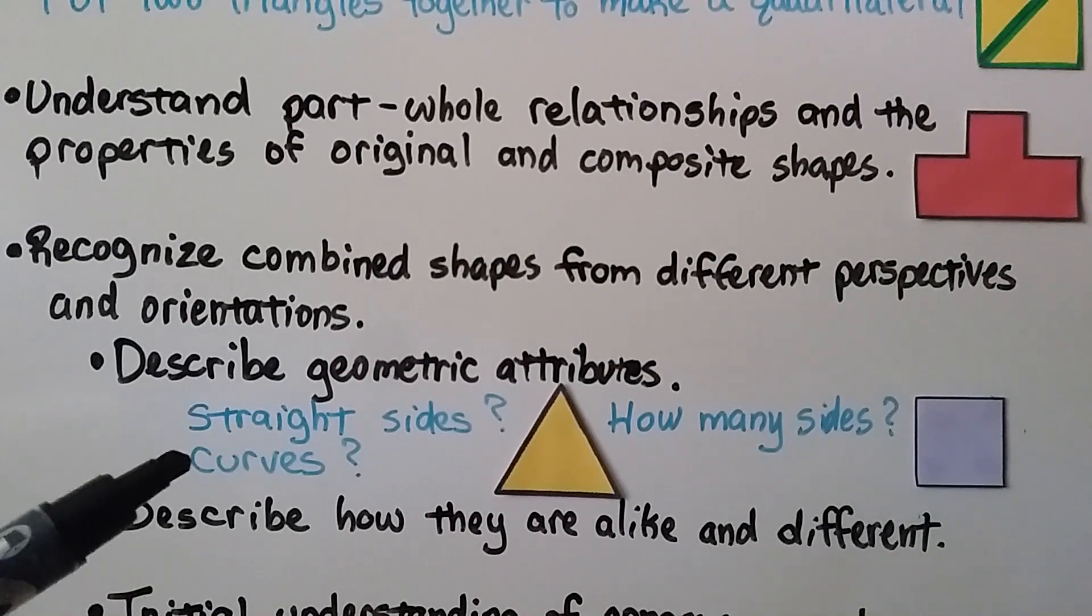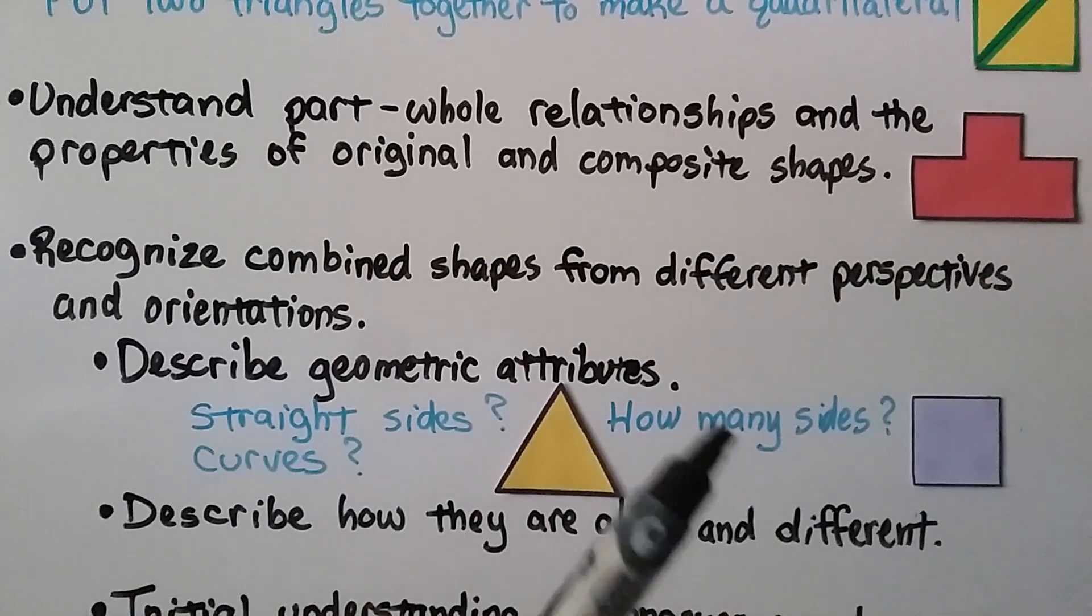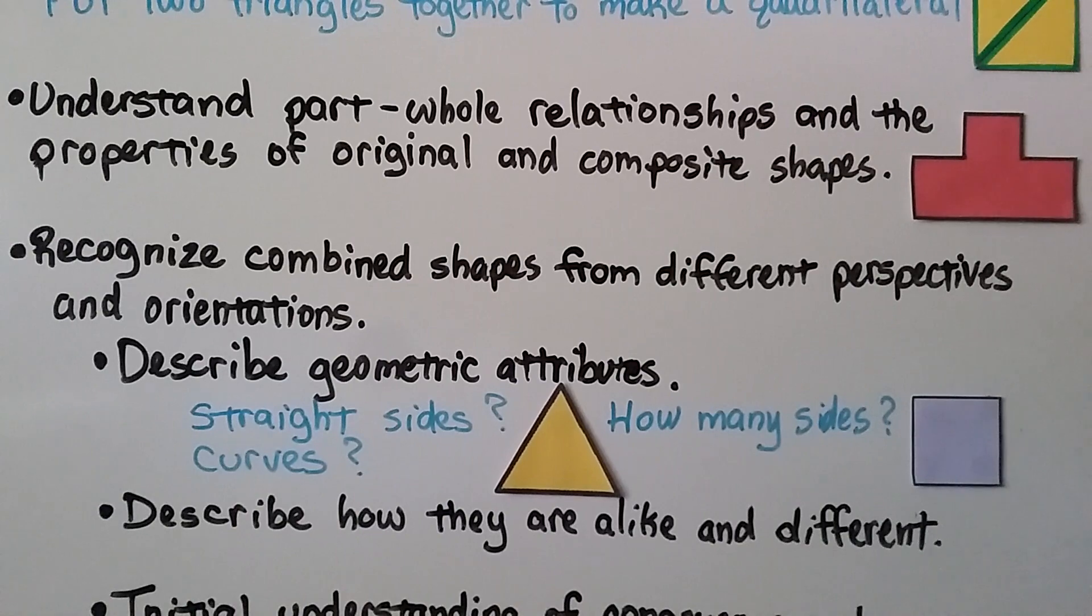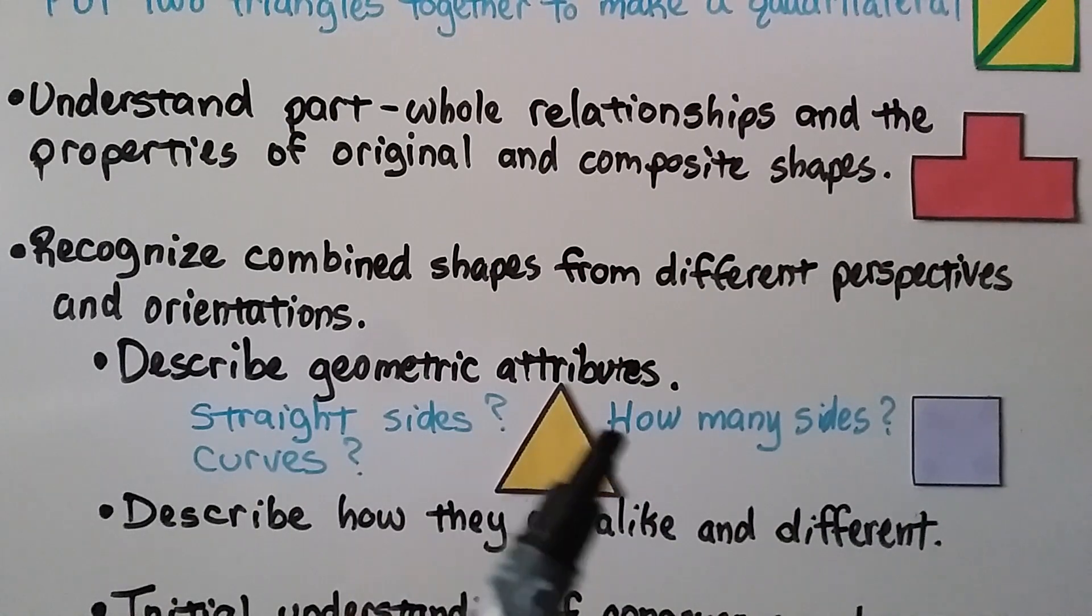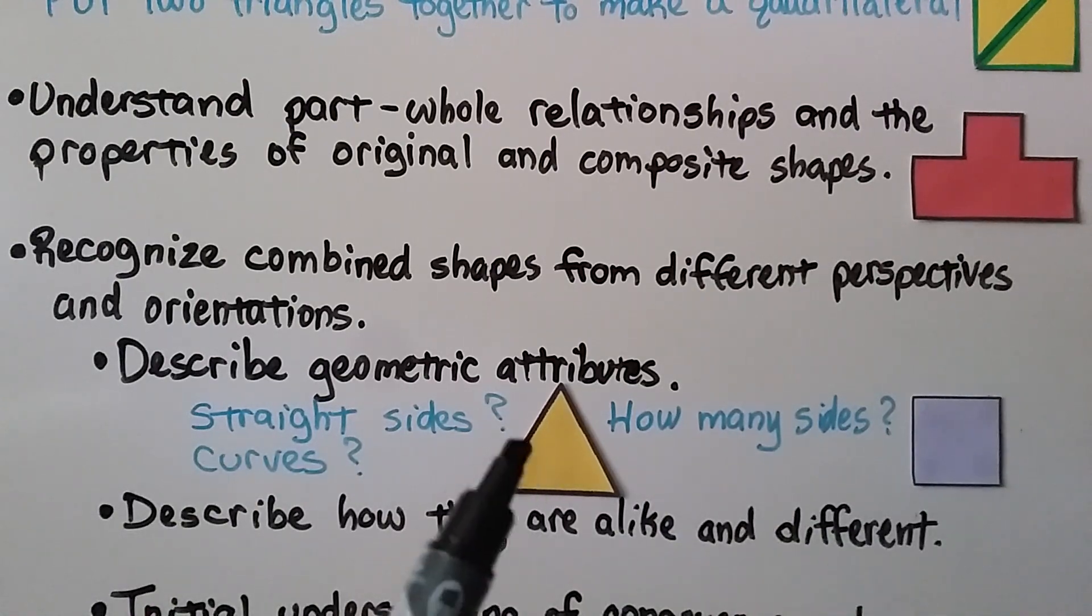Does it have straight sides or curves? How many sides does it have? How many corners does it have? And describe how they are alike and different. These are alike because they have straight sides. But they're different because this has three sides and that has four sides.